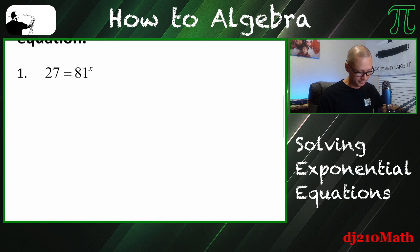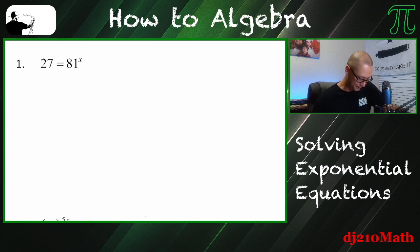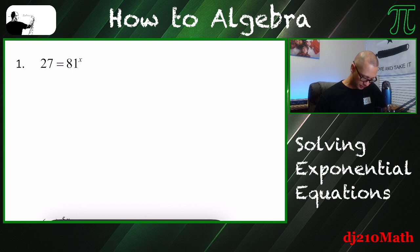So one of the two ideas is that I want to rewrite the equation so that the bases match, are the same base, right? Base meaning, so like right now, 27 is equal to 81 to the x power.